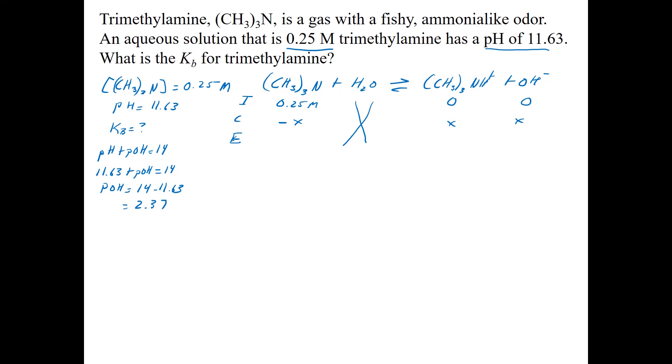And then the pOH is the negative log of OH minus. So these are from last chapter. The OH minus is 10 to the negative pOH. It's probably easier if you just memorize that formula. So 10 to the negative 2.37 is 0.004266.